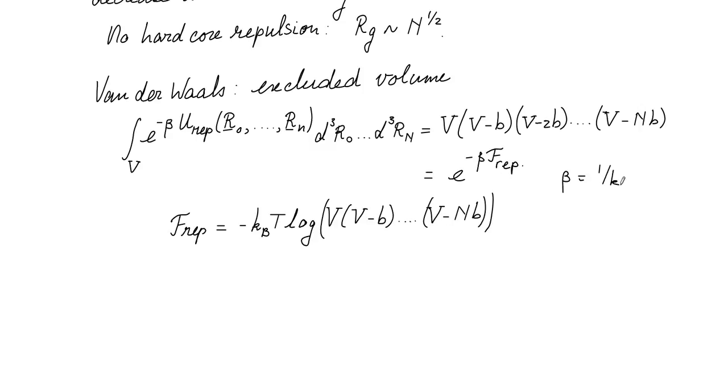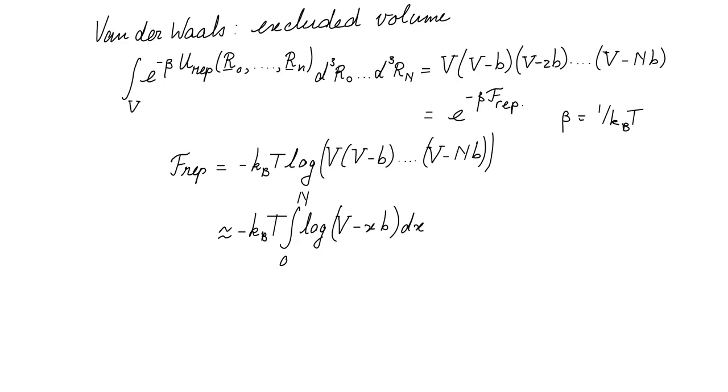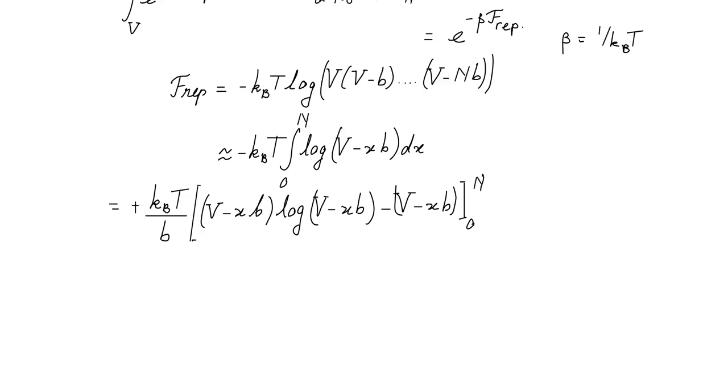We can find an explicit expression for this repulsive part of the free energy by taking the logarithm on both sides. We use the fact that beta as usual is given as 1 over kBT. Then we find that the f repulsion is kBT with a minus sign times the logarithm of the product. The logarithm of the product of all these terms becomes the sum of the logarithms of each term. And we can replace the sum by an integral. We can do this integral.